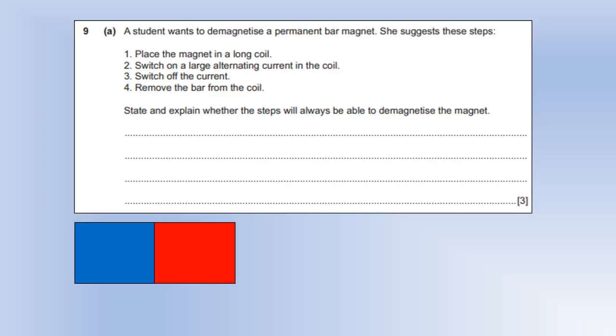So we're going to look at demagnetizing a permanent bar magnet. And a student suggests we place the magnet in a long coil. We put a large alternating current in the coil, switch off the current, and then remove the bar from the coil. State and explain whether these steps will always be able to demagnetize the magnet. And the key to this question is this word in here, always, which is where I think a lot of people went wrong with this. So the first thing people got wrong with this, apart from not reading always, is they said, well, it's a permanent magnet. You can't demagnetize it. And that's absolute rubbish. Anything that has been made to be a magnet or has been magnetized can be demagnetized. Permanent magnets are just quite difficult to demagnetize or we have to supply a lot of energy to demagnetize them. But it says in the question we've got a large alternating current, so we are going to be able to demagnetize it.